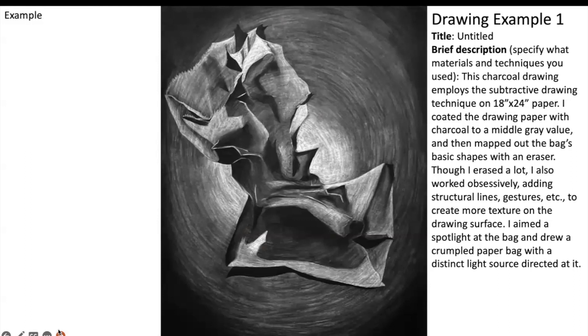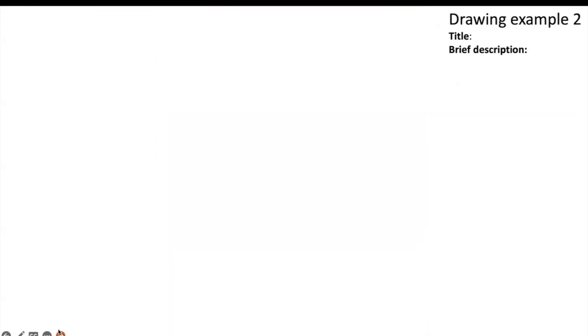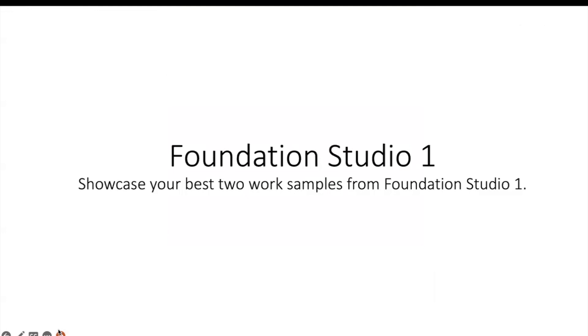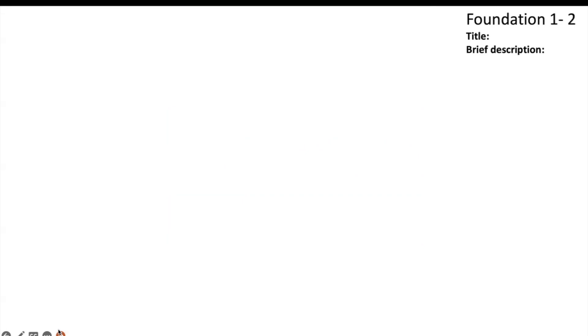Once you have completed the first slide with the first work sample, continue to the next slide. The process will stay the same — insert your image, add a title, and include a brief description. Once you have finished showcasing your best two drawings from Drawing One, the next slide will prompt you to showcase another two best examples from Foundation One. Repeat the same process: insert two nicely cropped images of your work samples from Foundation One and add a title and brief description for each.